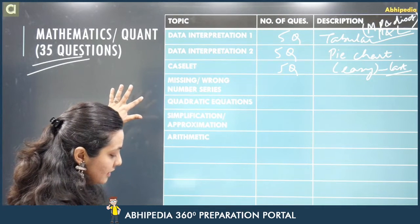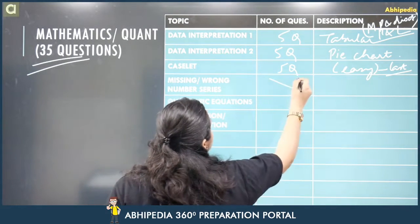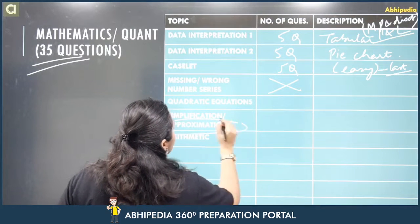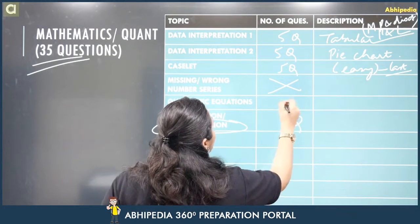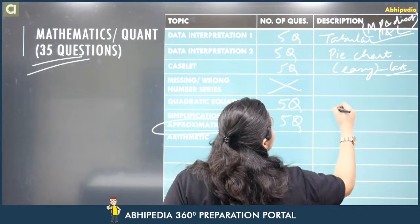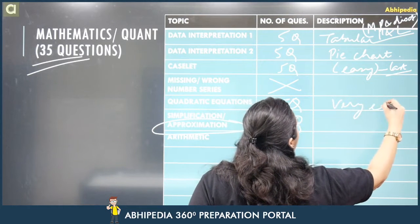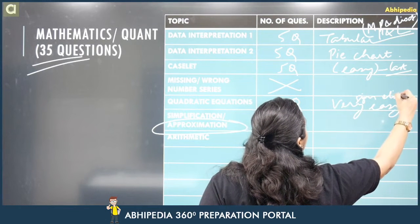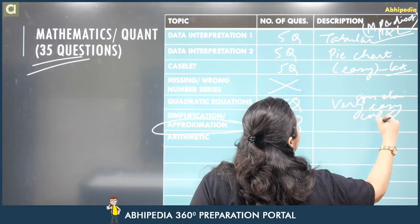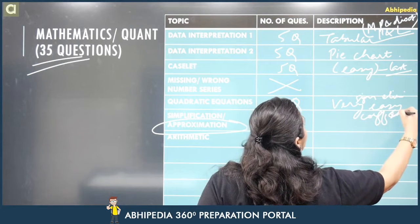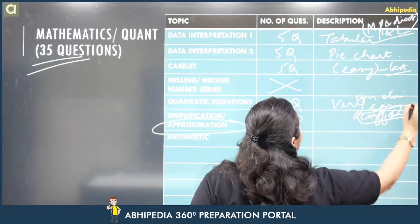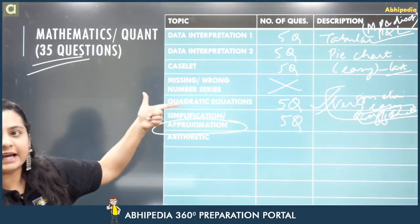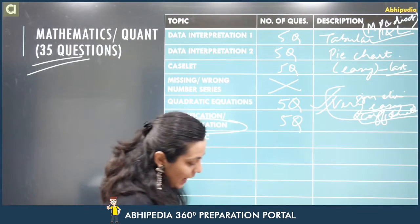Surprisingly, no missing number series or wrong number series this time. However, approximation came — five questions. Quadratic equations also appeared — five questions — which students called very easy, saying it could be solved by sign elimination alone. The coefficients were small, making calculations easier, so quadratic equations were very easy that way.